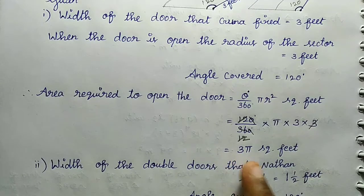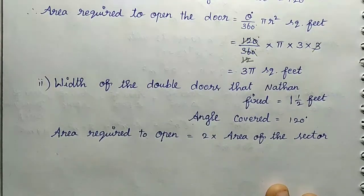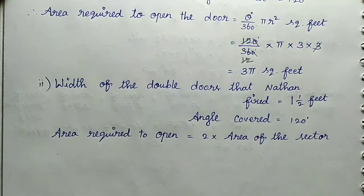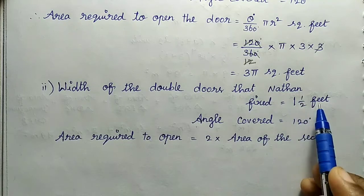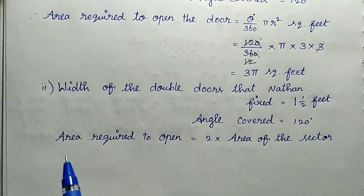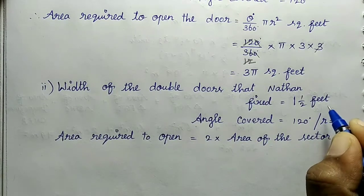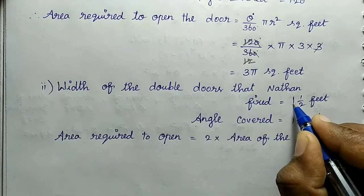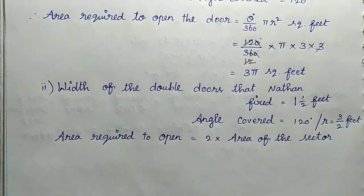Now the next part: Nathan's double door. Width of each double door panel that Nathan fixed is 1 and 1/2 feet. Converting the mixed fraction: 1 and 1/2 = 3/2 feet. So the radius r = 3/2 feet, and the angle is 120 degrees.